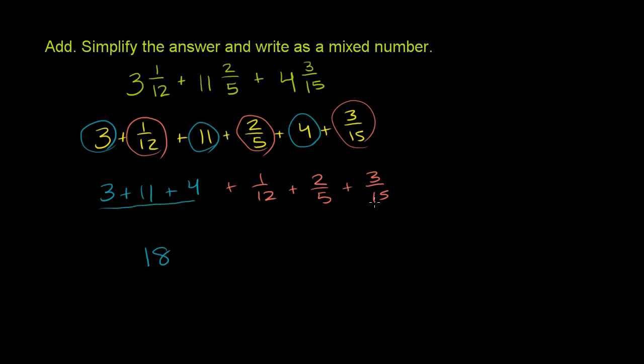This will be a little bit trickier, because we know that when we add fractions, we have to have the same denominator. And now we have to make all three of these characters have the same denominator. And that denominator has to be the least common multiple of 12 and 5 and 15.